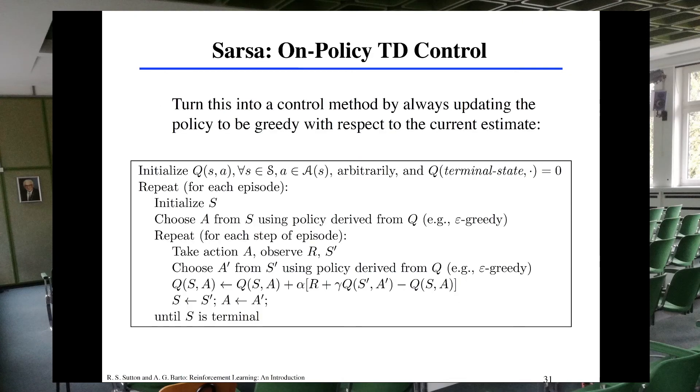There are two main algorithms, one is an on-policy method, this method is called SARSA and there's another one that we are going to study which is Q-learning. Q-learning is an off-policy algorithm. So remember that in on-policy methods we consider only one policy, in off-policy we will consider two policies.